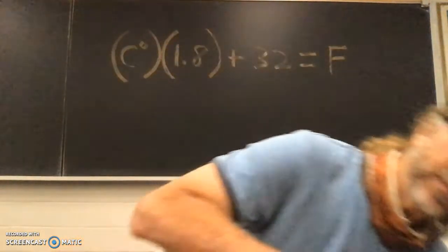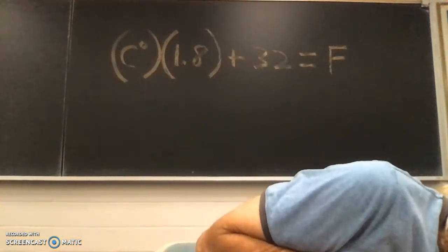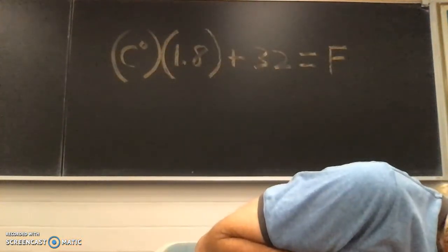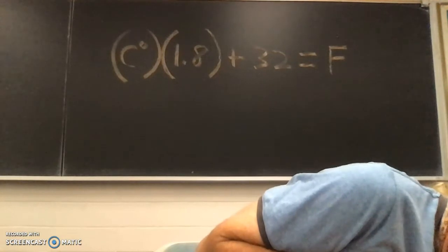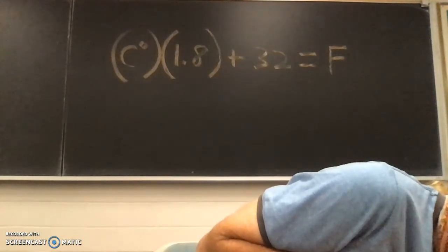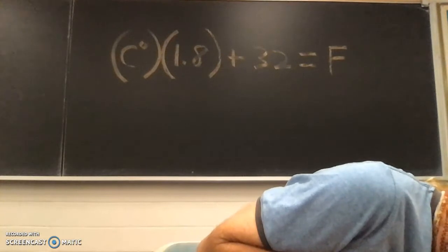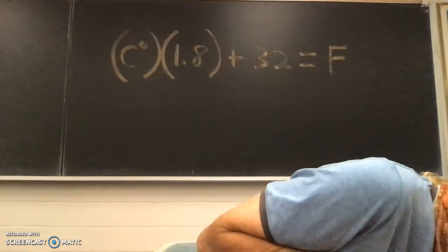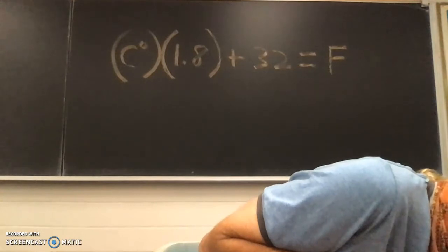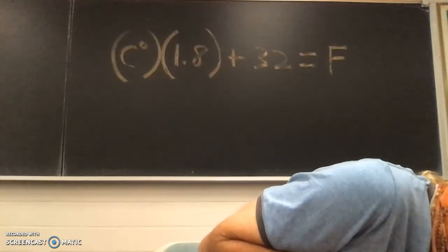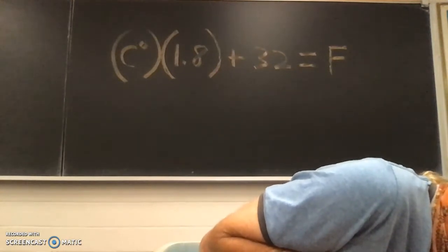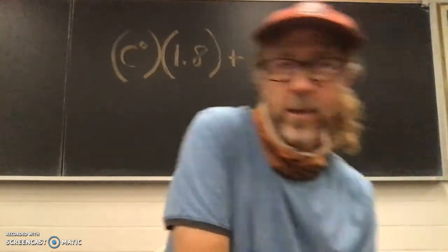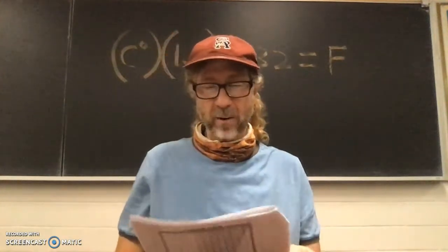See that formula behind me? It says degrees Celsius times 1.8 plus 32 equals Fahrenheit. Let's sing it together: degrees Celsius times 1.8 plus 32 equals Fahrenheit. You're going to need to know that in a minute.